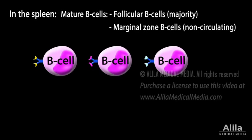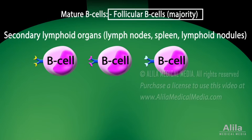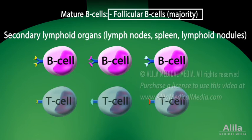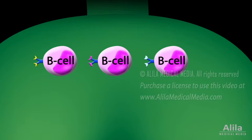The majority of mature B cells, namely the follicular B cells, circulate to secondary lymphoid organs — the same locations as mature T cells — where they expect encounters with pathogens. T cells and B cells are usually separated into defined T cell and B cell zones within these organs. Specific immunity relies on the invading pathogen finding a match among these many variations of B cells.